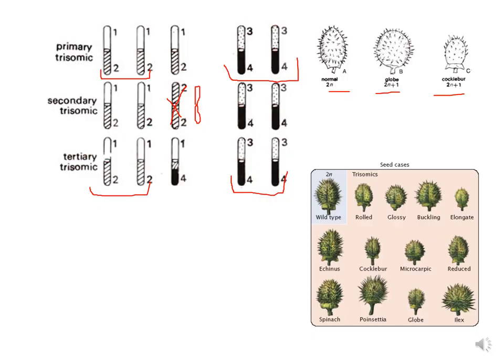Here you can see how the types are represented. In primary trisomic, the extra chromosome is exactly similar to the two homologues. In secondary trisomic, the third chromosome has both arms identical, representing either the lower arm or the upper arm as an isochromosome. In tertiary trisomic, the extra chromosome is a product of translocation, and there are many possibilities because of translocation.